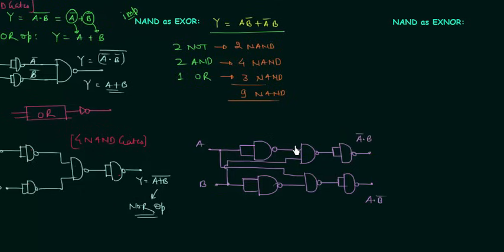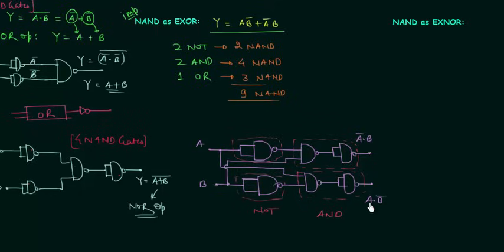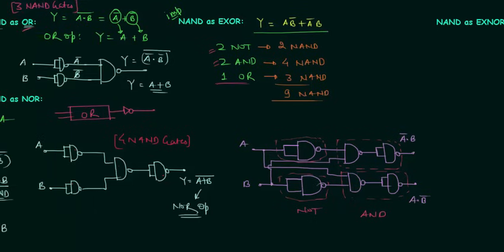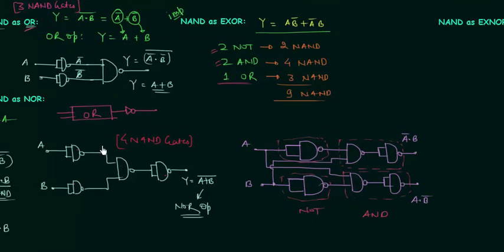You can clearly see these two NAND gates are working as a NOT gate and these two NAND gates are working as an AND gate. We have implemented the two NOT gates and two AND gates. The only thing remaining is to implement one OR gate.